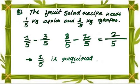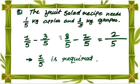Question C: A fruit salad recipe needs 1 upon 5 kg apples and 3 upon 5 kg grapes. We write 3 upon 5 minus 1 upon 5. 3 minus 1 equals 2. Answer is 2 upon 5. I hope you all have understood.